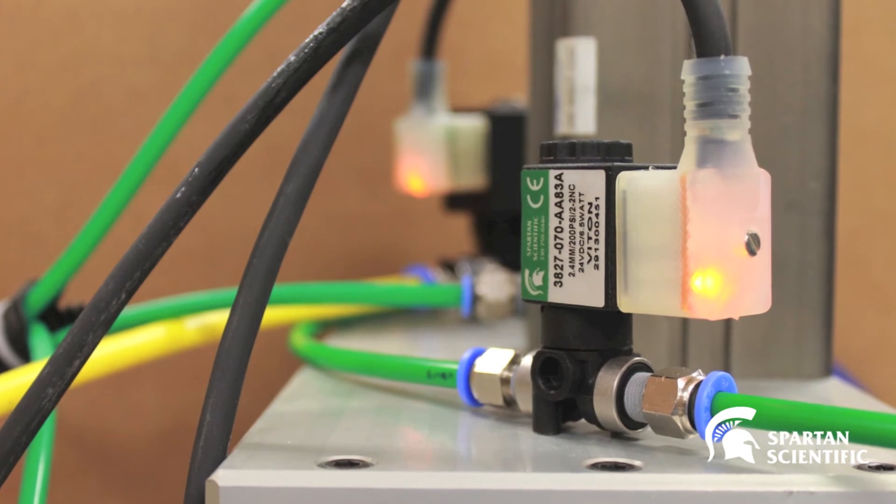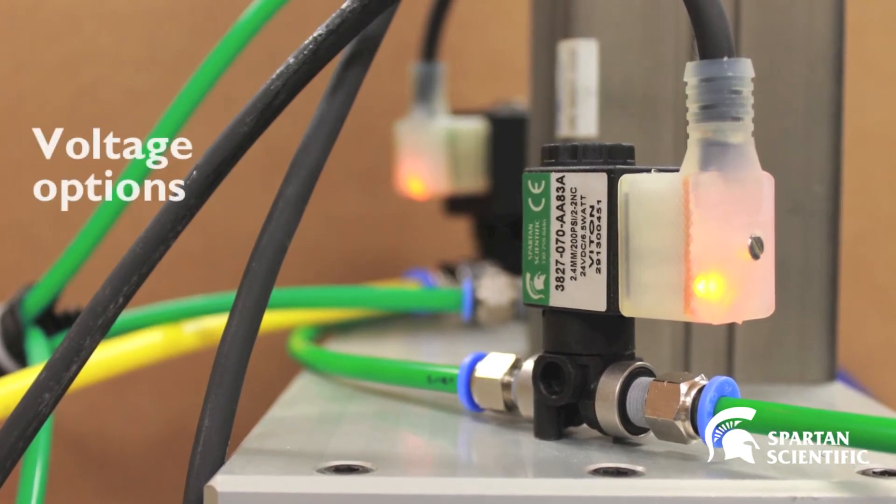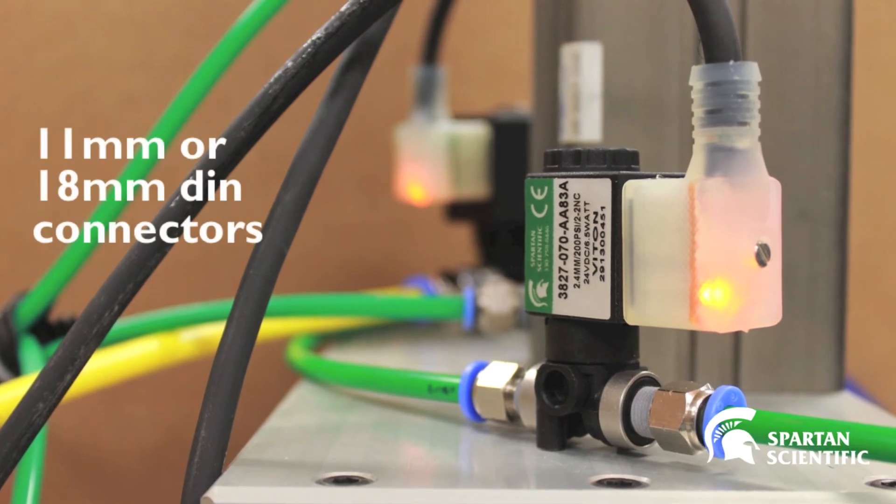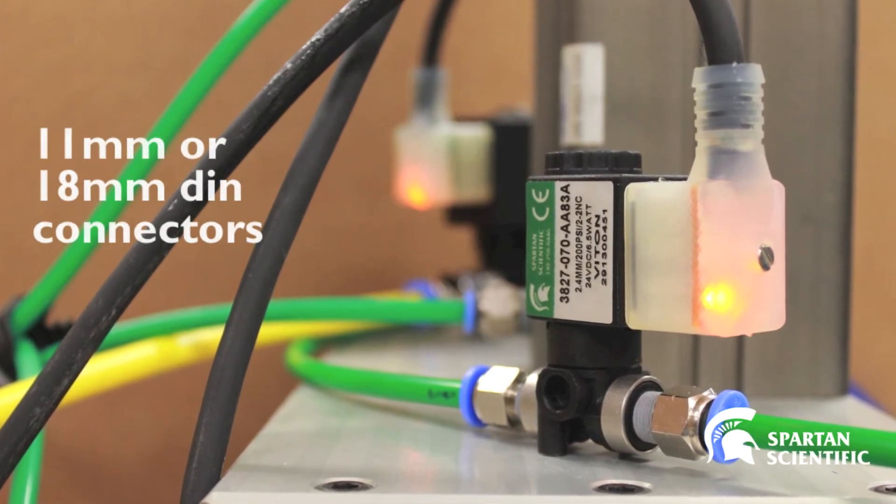Both the 3827 and 6200 valves come in a variety of voltage options and are offered with male spades for 11-millimeter or 18-millimeter DIN connectors.